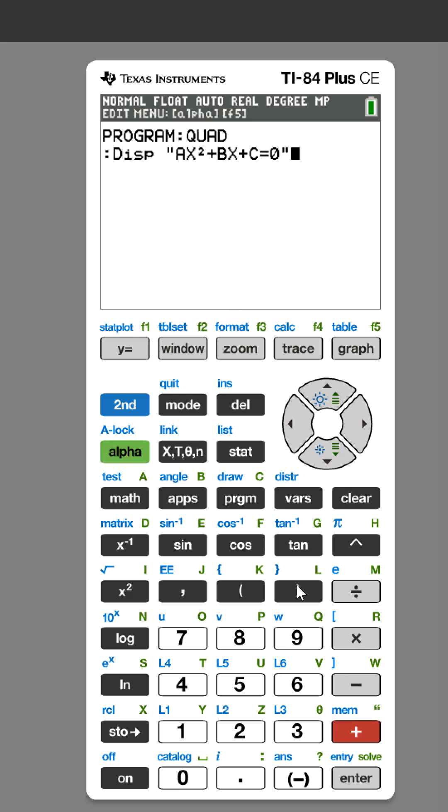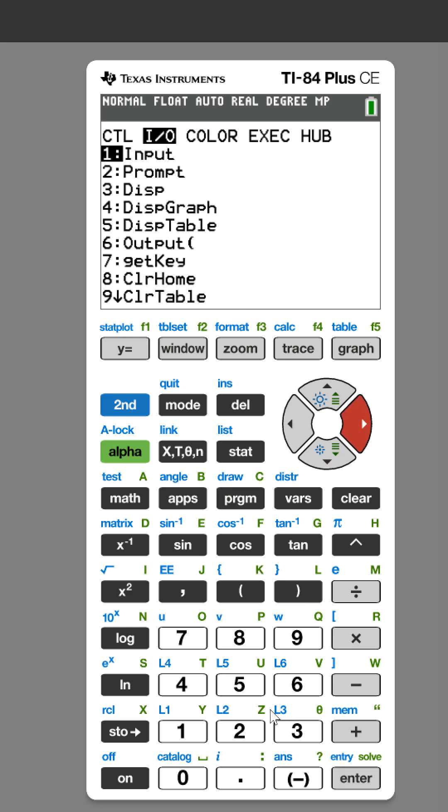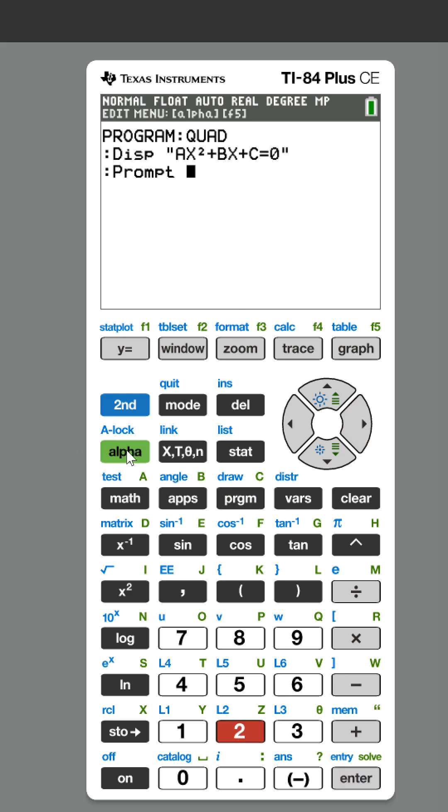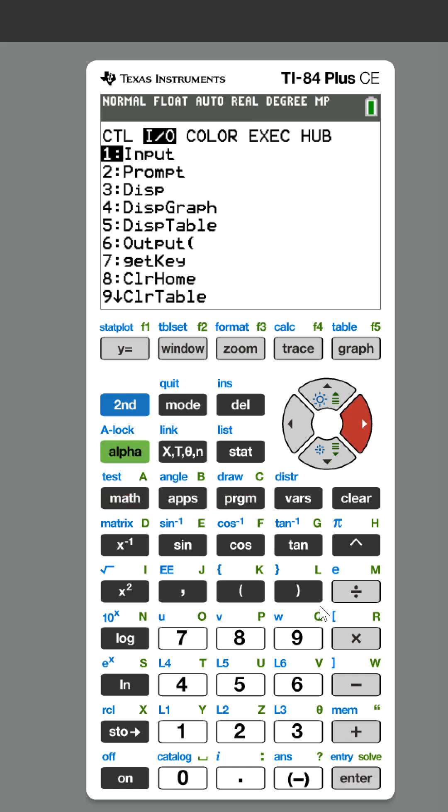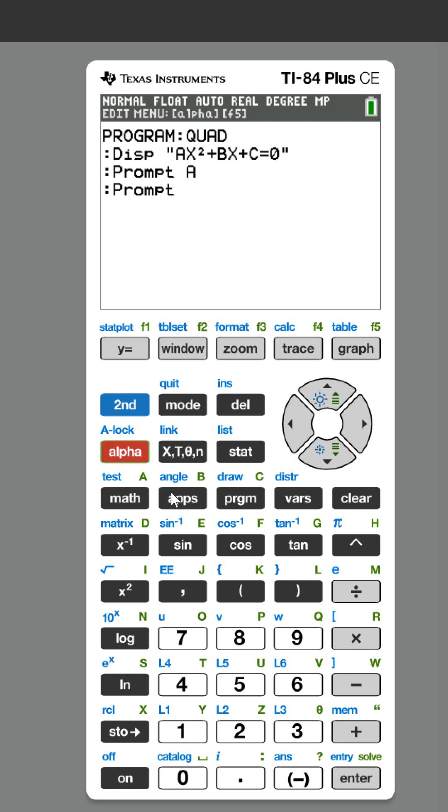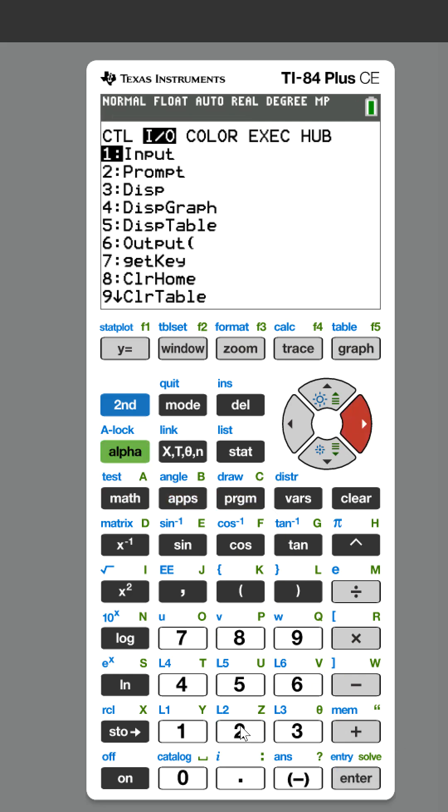So now we're going to ask, prompt for a, we're going to prompt for b, and we're going to prompt for c.